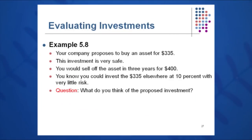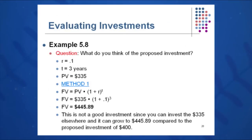Another example: your company is going to buy an asset for $335 — a very safe investment. You'll sell the asset in three years for $400. You could invest the $335 elsewhere at 10%. Should you take on this proposed investment? You can solve it a present value way or a future value way. Using the future value method first: what is the future value of $335 invested at 10%? 335 times 1.1 to the third power gives $445. So we would not take on the other investment, which would only pay $400 — investing elsewhere at 10% gets more money.